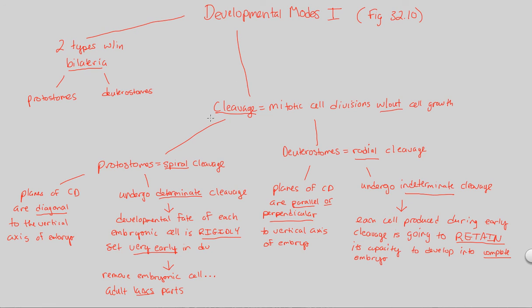That covers our first idea of developmental modes. The mode we focused on is whether cleavage is spiral or radial: spiral cleavage involves diagonal cell divisions and determinant fate on the protostome side, while radial cleavage involves parallel or perpendicular divisions and indeterminate nature on the deuterostome side.